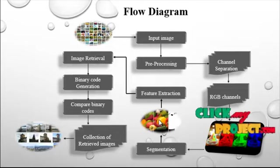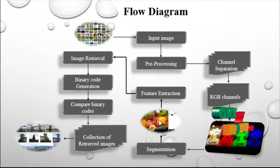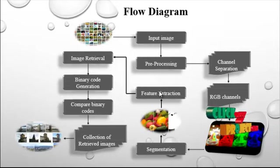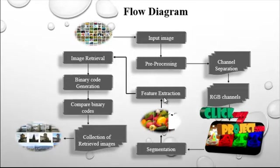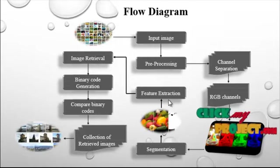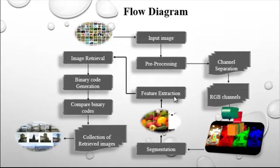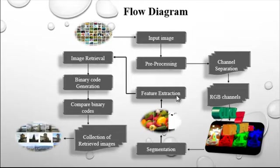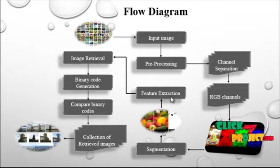From the segmented image, features are extracted. Feature extraction is a process to retrieve the most important data from the raw data — finding a set of parameters that defines the shape of each character precisely and uniquely. In the feature extraction phase, each character is represented by a feature vector which becomes its identity. The major goal is to extract features that maximize the recognition rate with the fewest elements and generate a similar feature set for varieties of the same symbol.